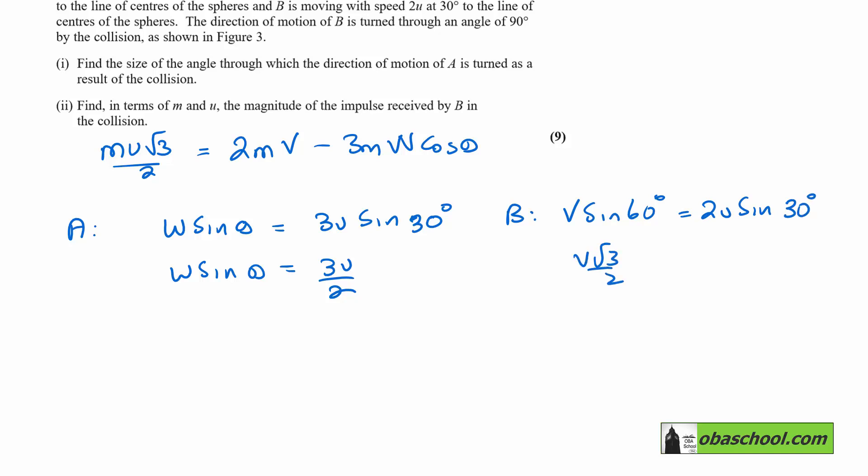And then for B in the same way we get V sin 60 is equal to 2U sin 30. So V root 3 on 2 equals U. V equals 2U on root 3. And rationalizing the denominator there gives us 2U root 3 on 3.